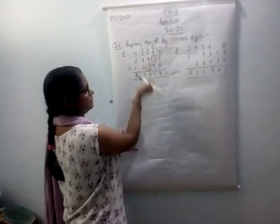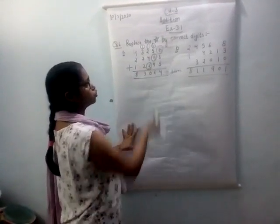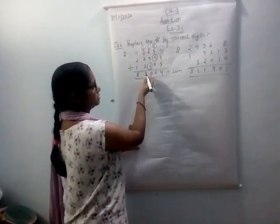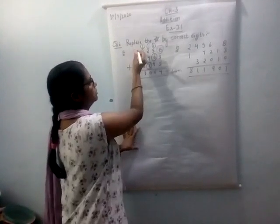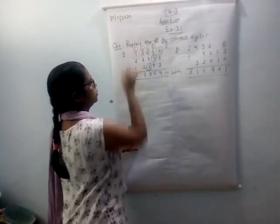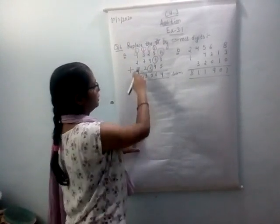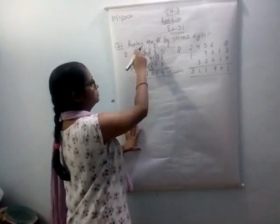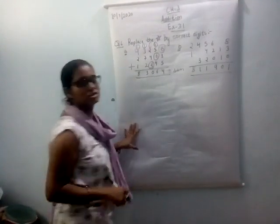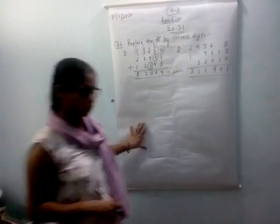3 plus 7 is 10, plus 2 is 12, plus 1 is 13 — that means it's correct and 1 carries forward. 4 plus 2 is 6, plus 1 is 7, plus 1 is 8, which is given to you as a sum.